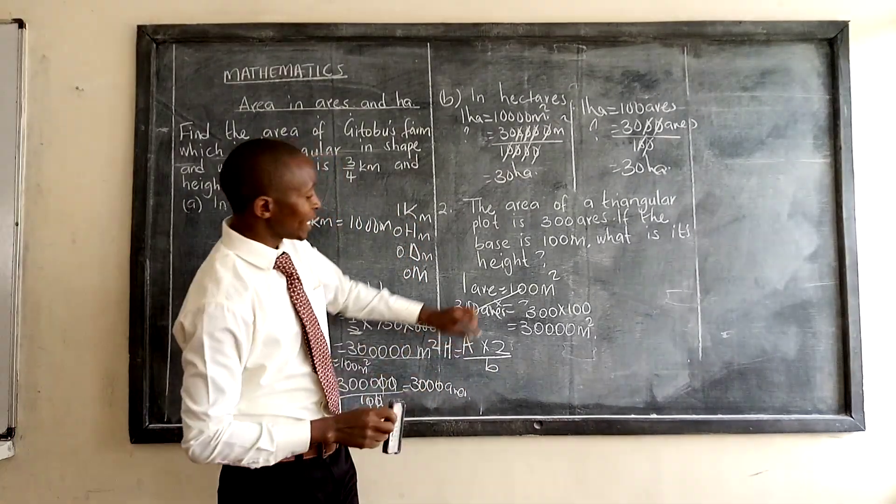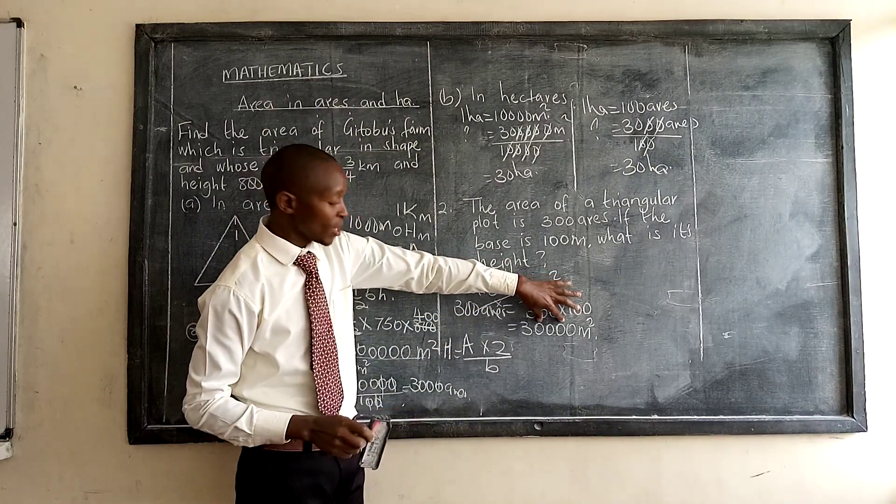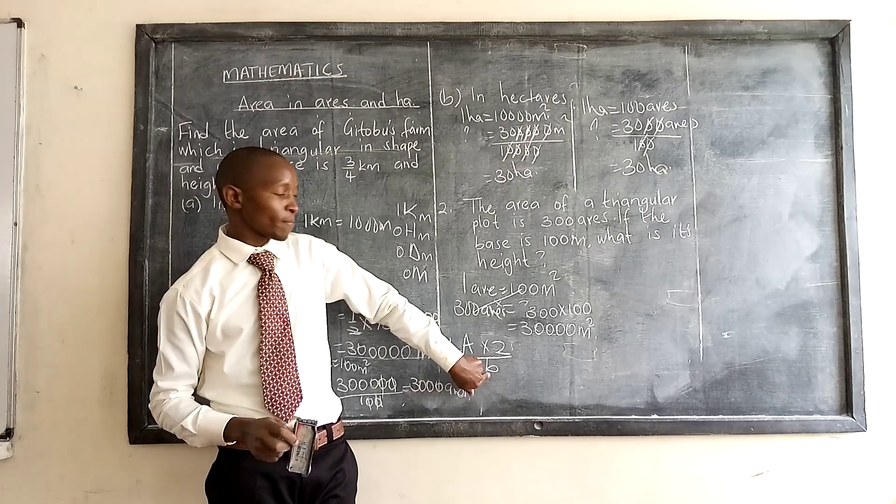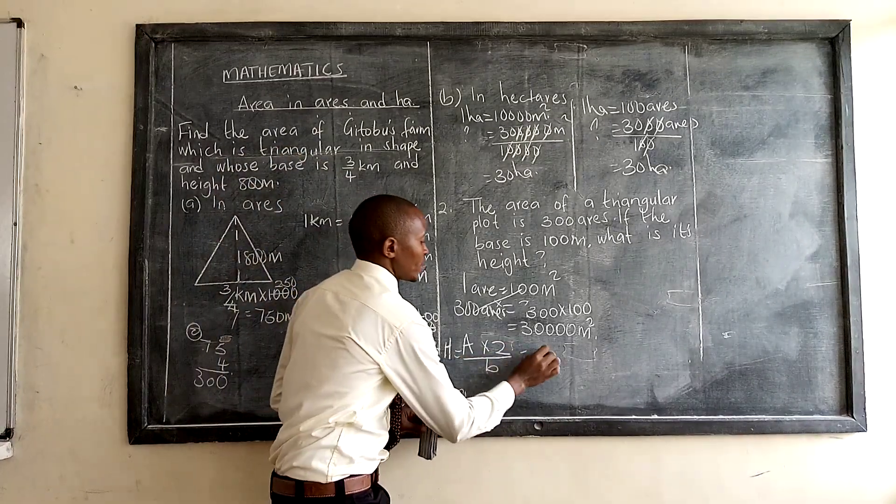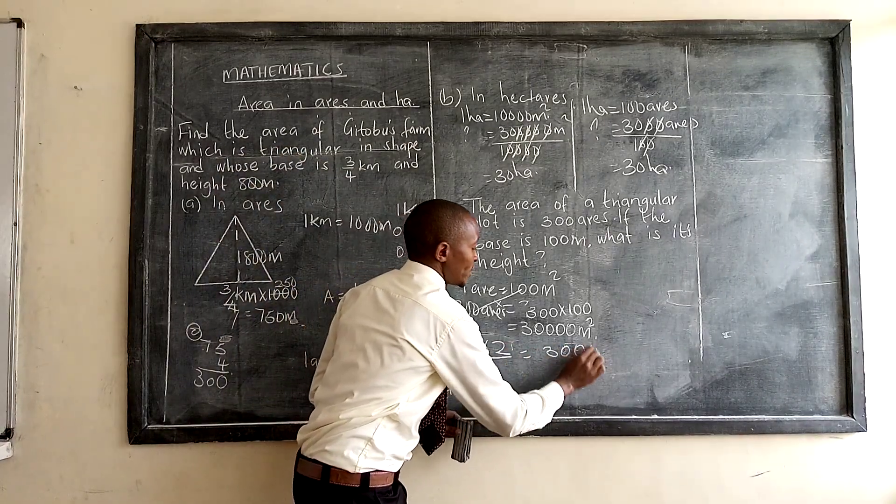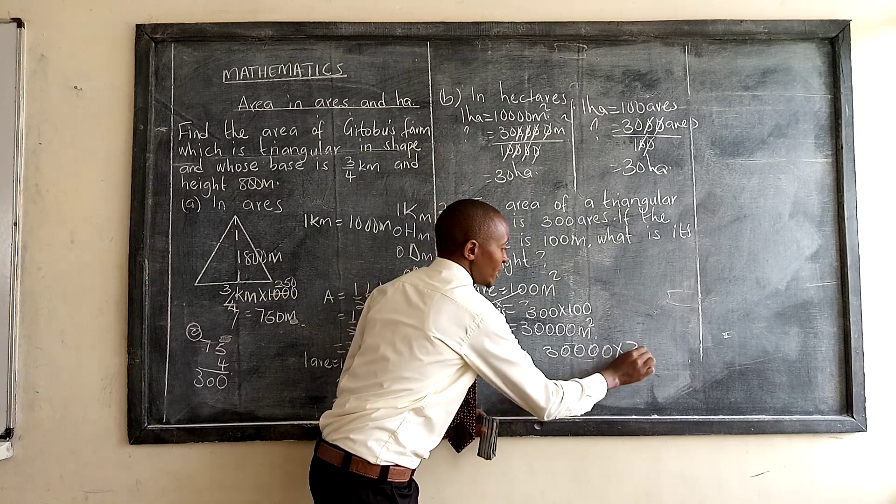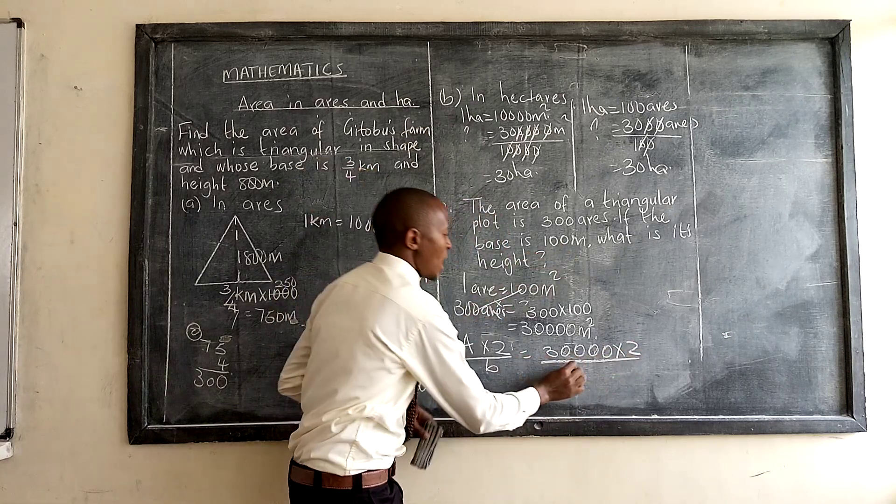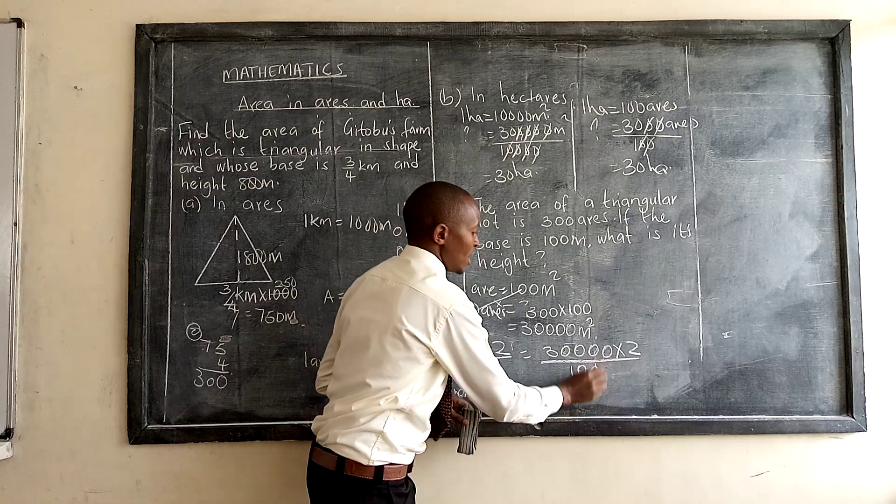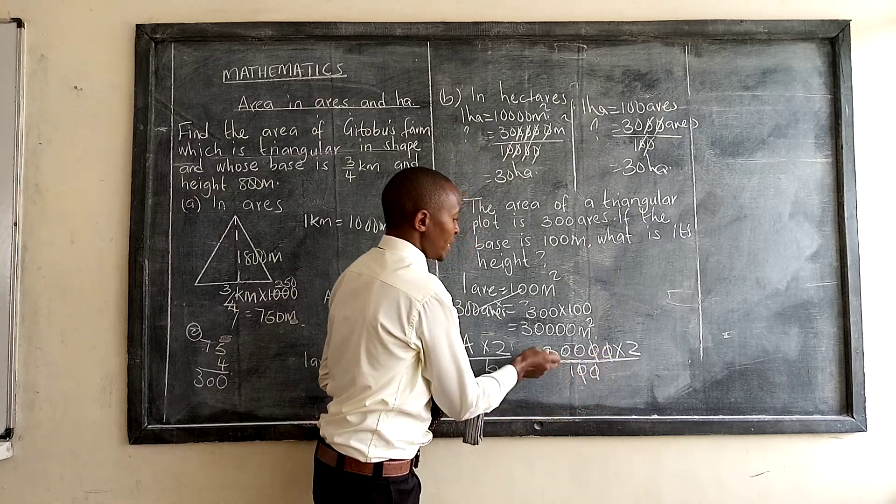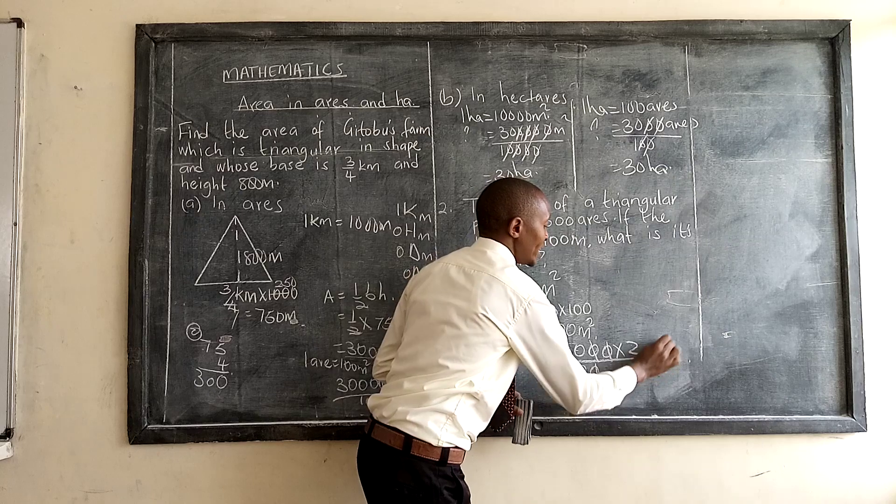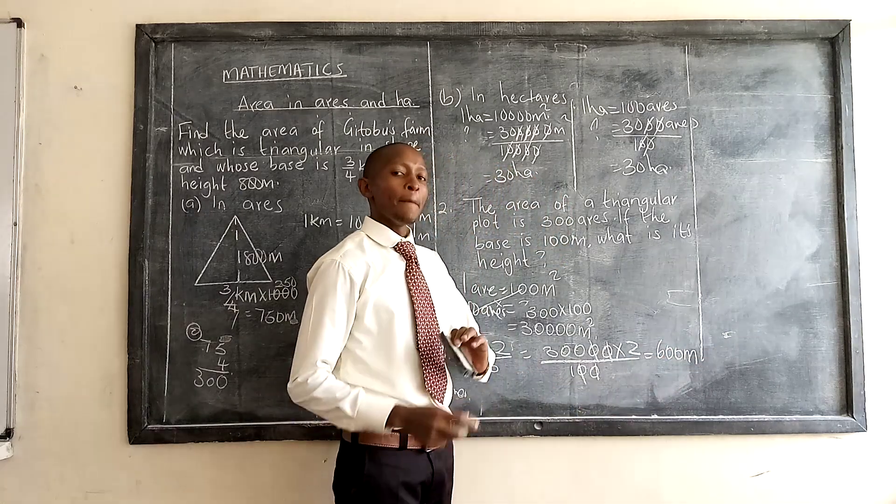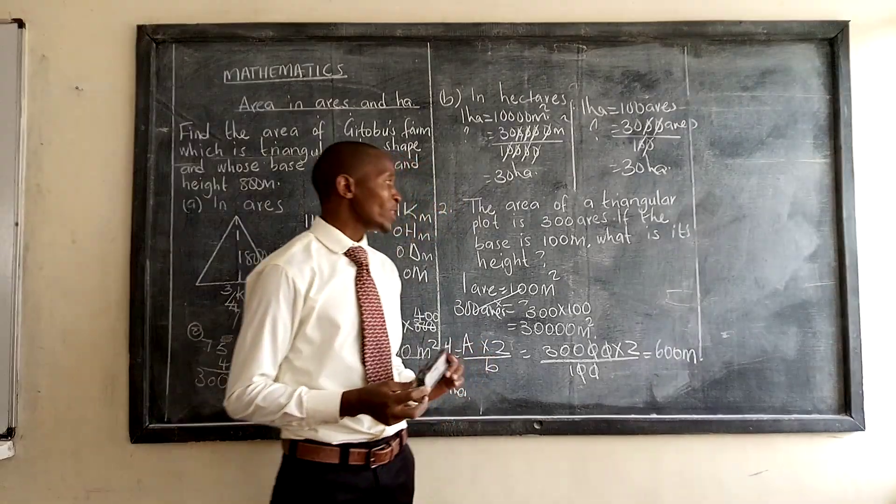I repeat: you take the area that you have, you multiply by 2, and then you divide by the base. By 100. Then you have 0, 0, 0, 0, 0, 0, 0. Then 300 times 2, you get that is 600. And 600 meters.